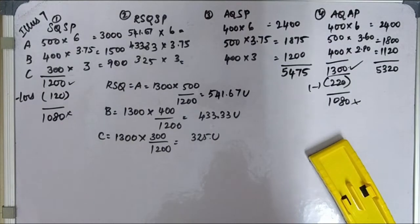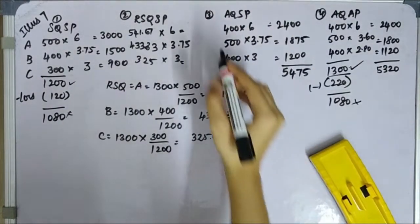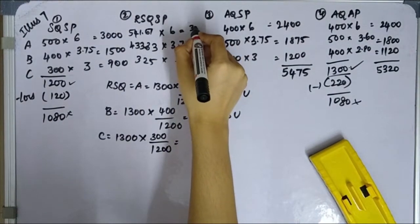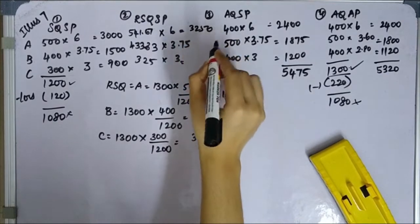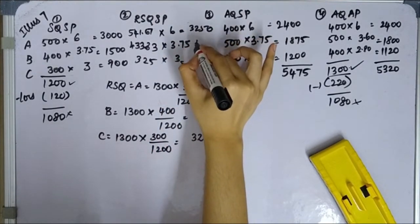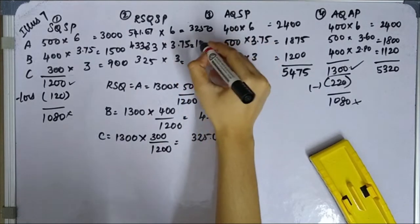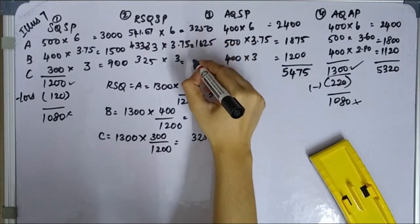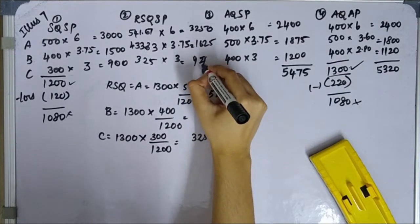When I multiply to get RSQ SP, total value is 5,850. Total value is 5,850. I get 3,250, 1,625, and 975.